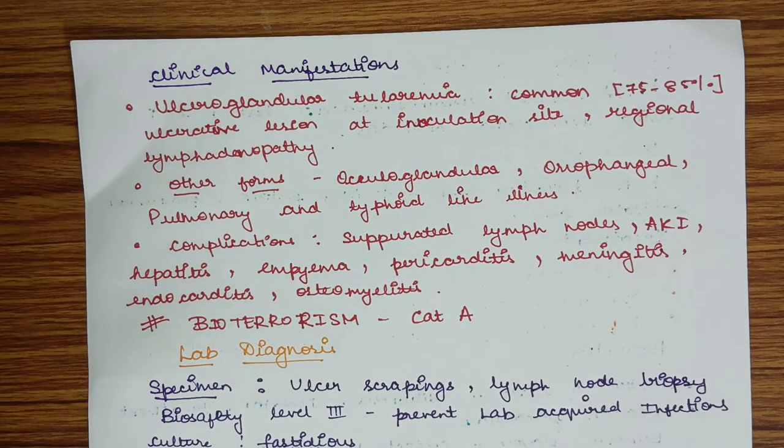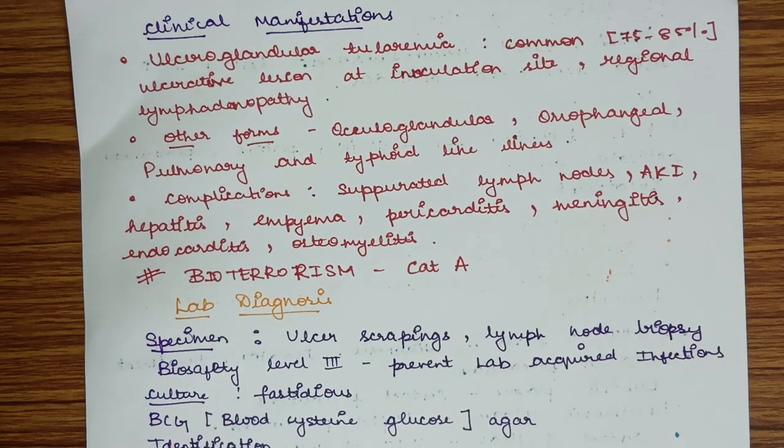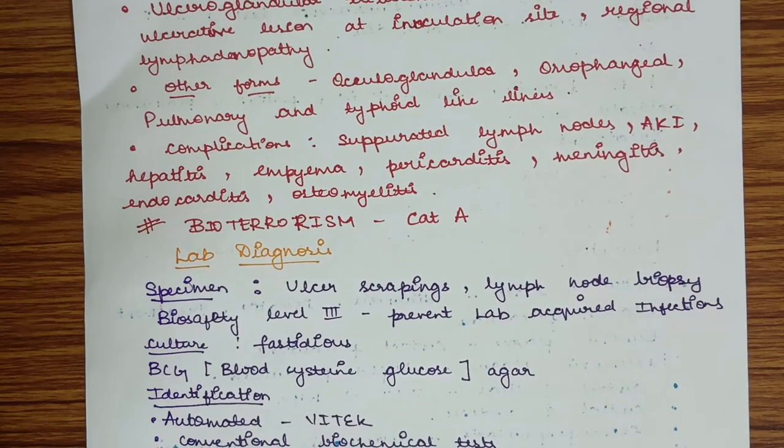Clinical manifestations of tularemia include ulceroglandular tularemia, the most common manifestation seen in 75-85% of cases. There is ulcerative lesion at inoculation site and regional lymphadenopathy. Other forms are oculoglandular, oropharyngeal, pulmonary, and typhoid-like illness. Complications include suppurated lymph nodes, acute kidney injury, hepatitis, empyema, pericarditis, meningitis, endocarditis, and osteomyelitis. Basically almost all organs can be affected.